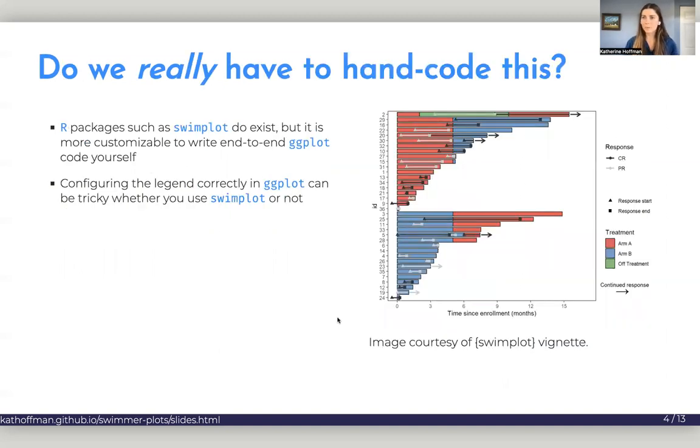You might be thinking, do we really have to hand code a swimmer plot? It looks sort of complicated. And the answer is that swimmer plot packages such as swimplot do exist, but it's generally just more customizable to write the end-to-end ggplot code yourself because these packages ultimately just output a ggplot object.